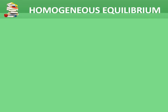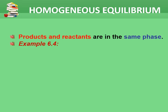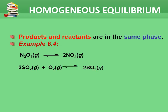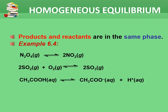There are two types of equilibrium systems that must be considered. Homogeneous equilibrium is when the products and reactants are in the same phase. For example, N2O4 becoming 2NO2 is in the same gas phase. 2NO2 becoming SO3 is also gas, whereas acetic acid CH3COOH dissociates to become CH3COO⁻, acetate ion, and H⁺, hydrogen ion. Please write this down on your page 168.